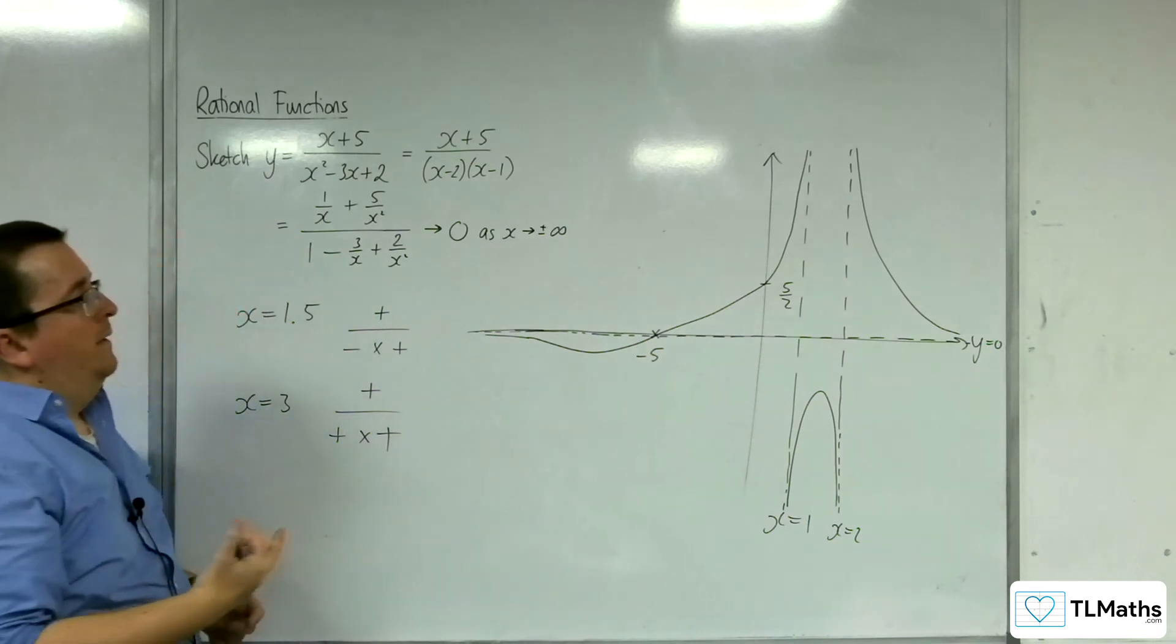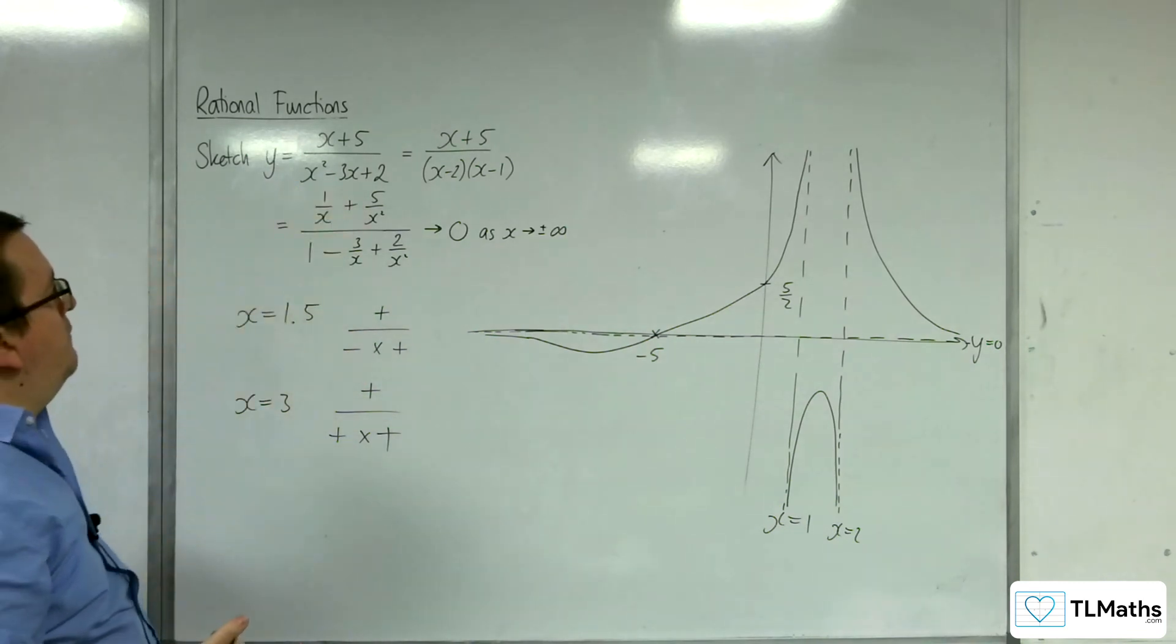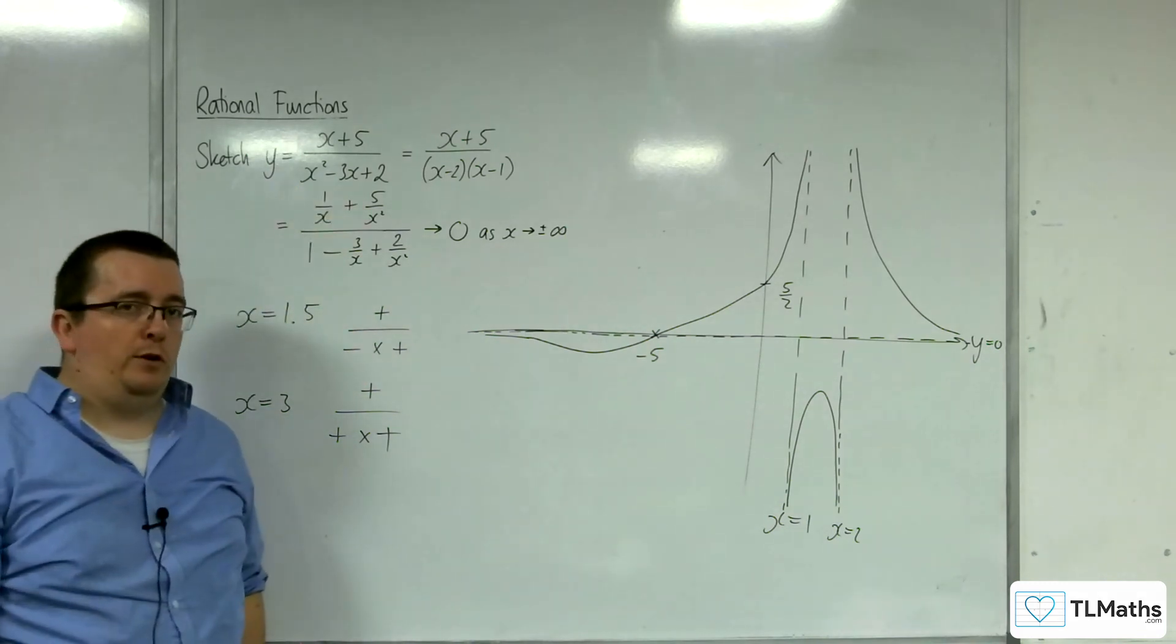Okay? And so that is what the curve y equals x plus 5 over x squared take away 3x plus 2 must look like.